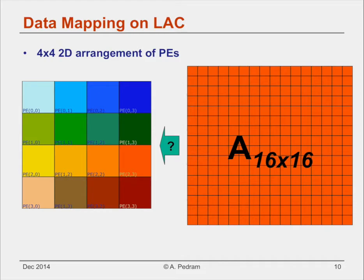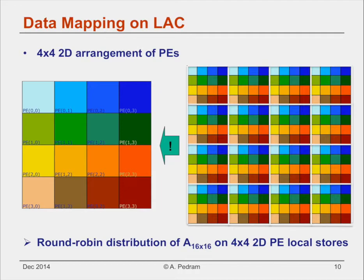The data stored in the core is in 2D round-robin fashion. We can see how a 16x16 block of A is distributed among the PEs depicted on the right with different colors. So each PE has a different color.